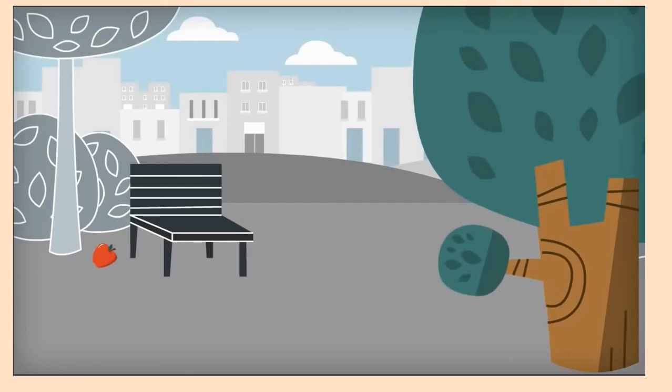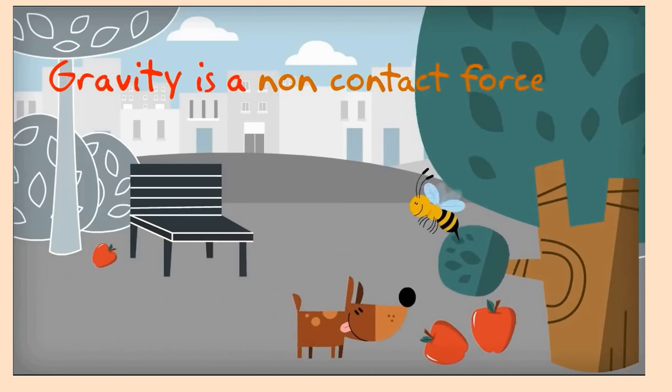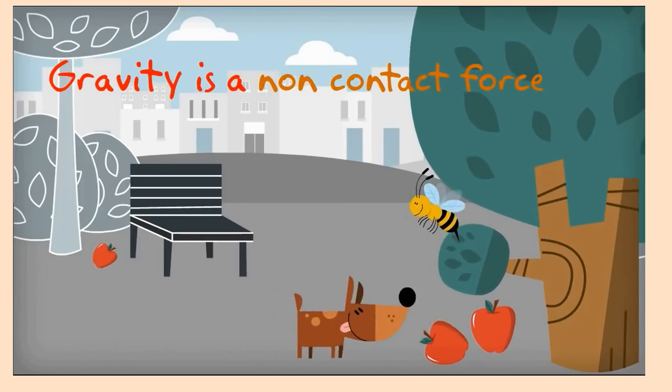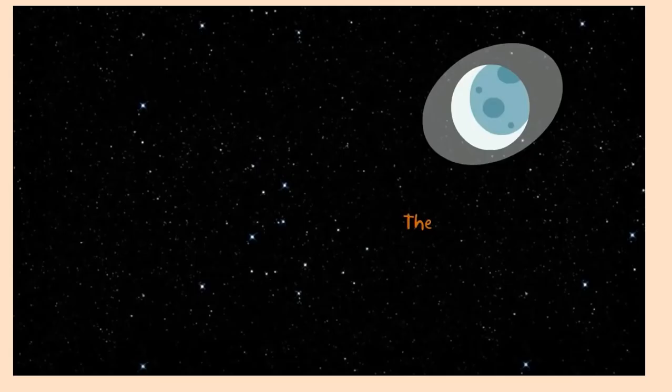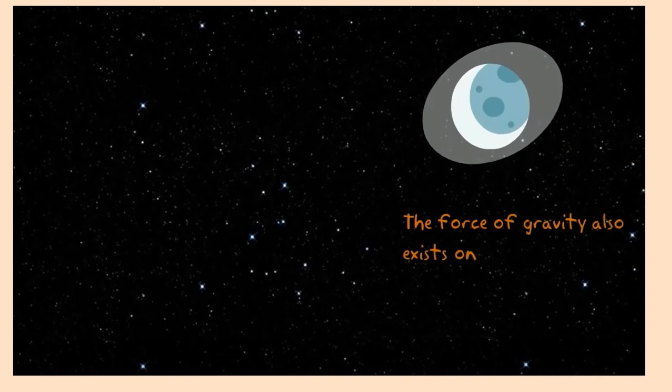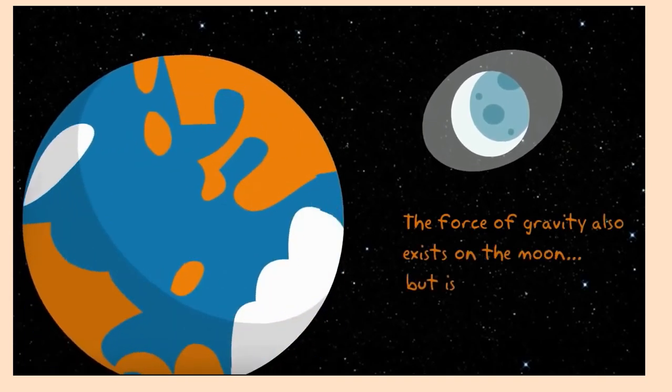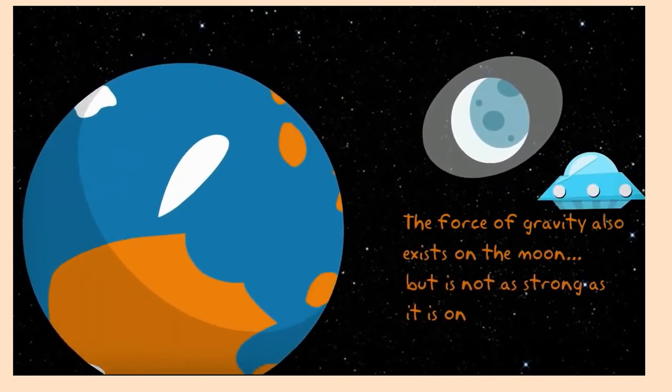The force that makes things fall to the ground is called gravity. Gravity is an example of non-contact force. Gravity pulls an object towards the earth. The force of gravity also exists on the moon, but it is not as strong as it is on the earth.